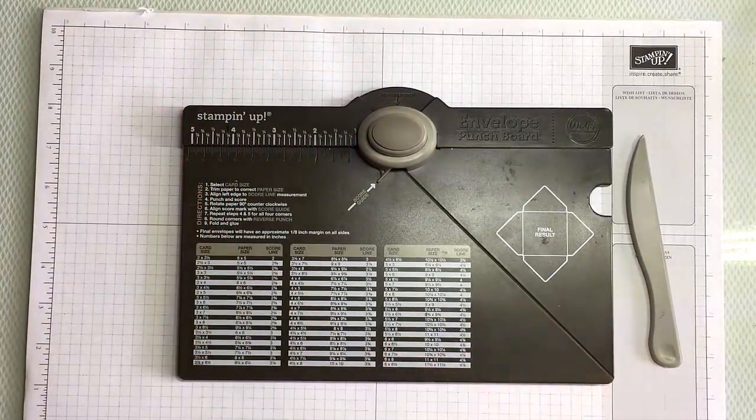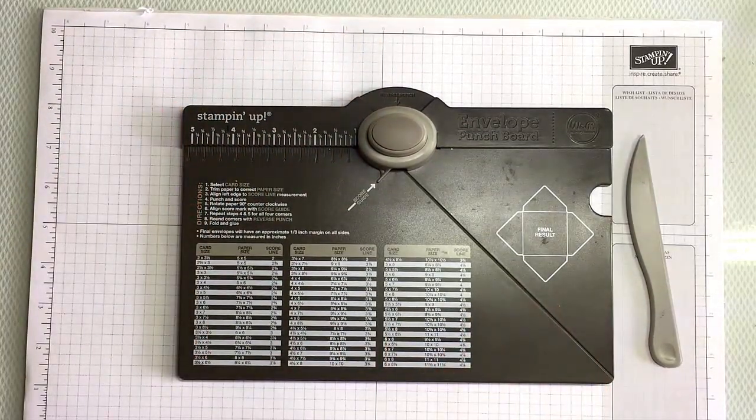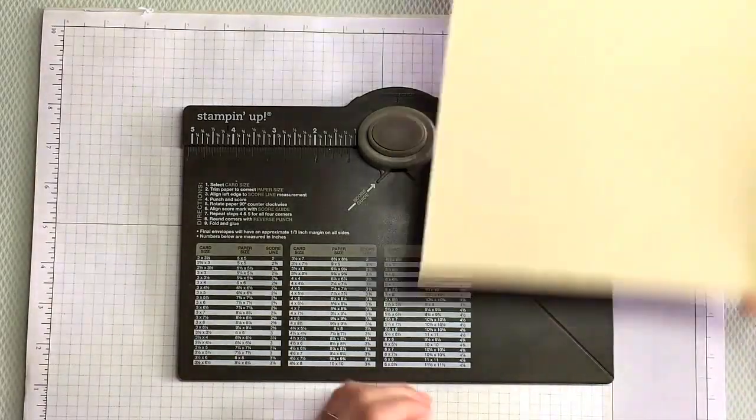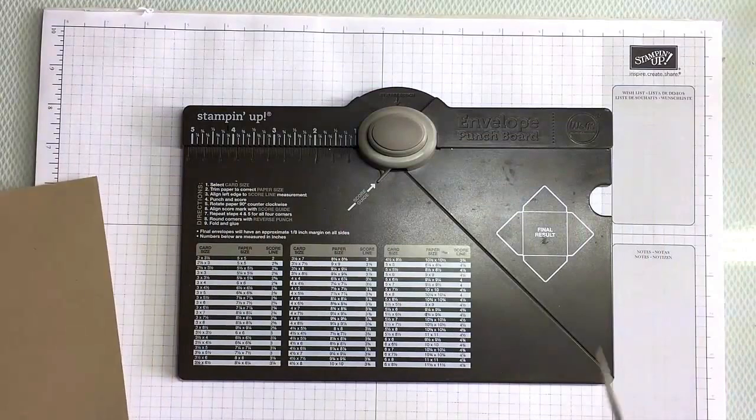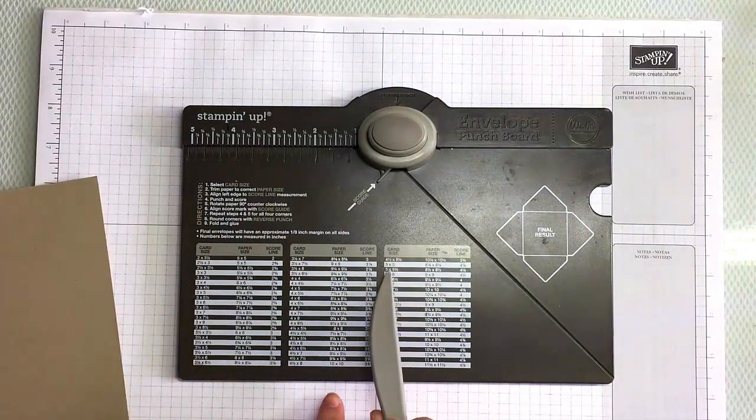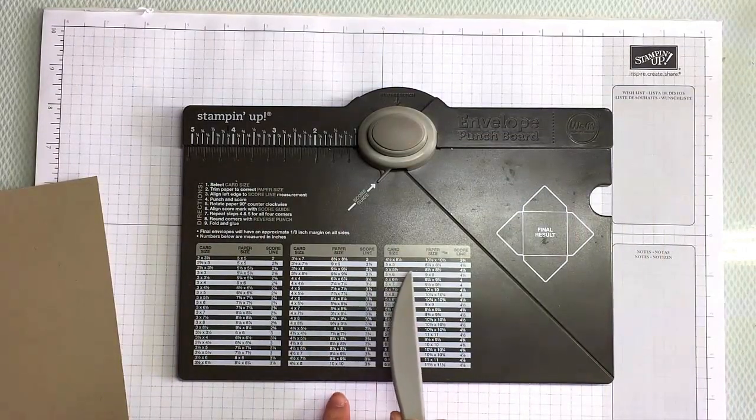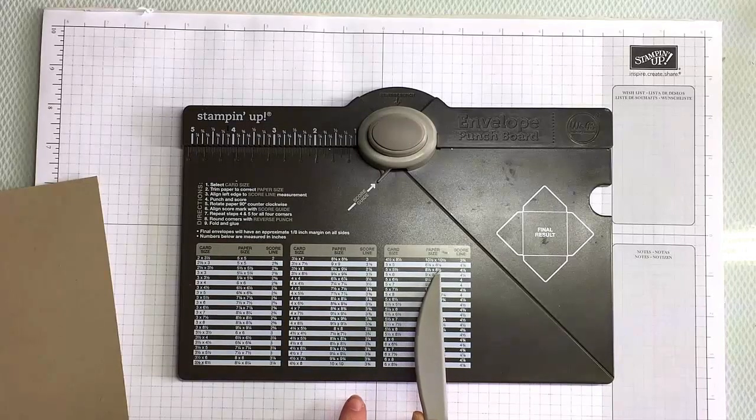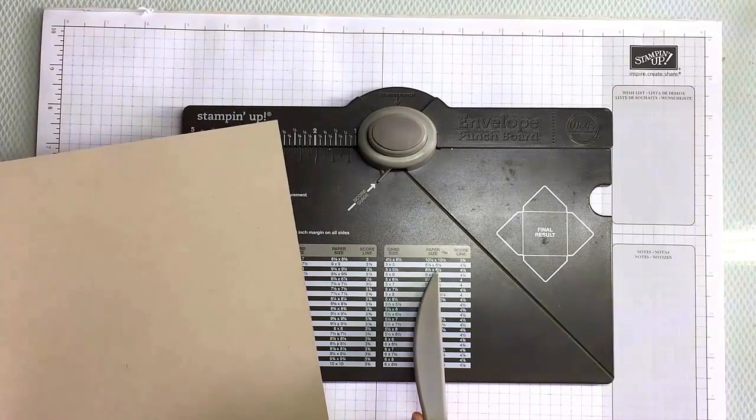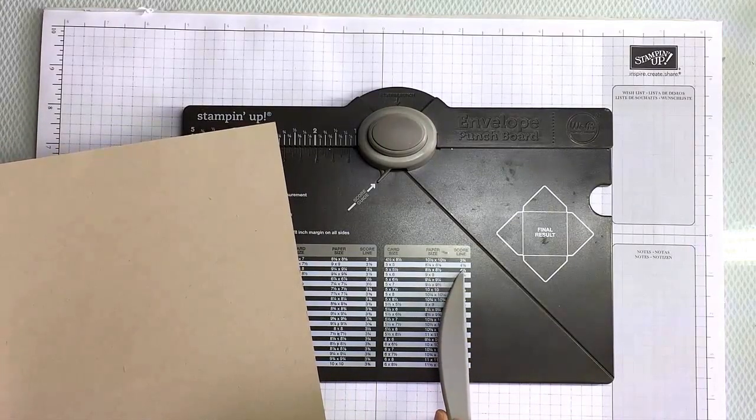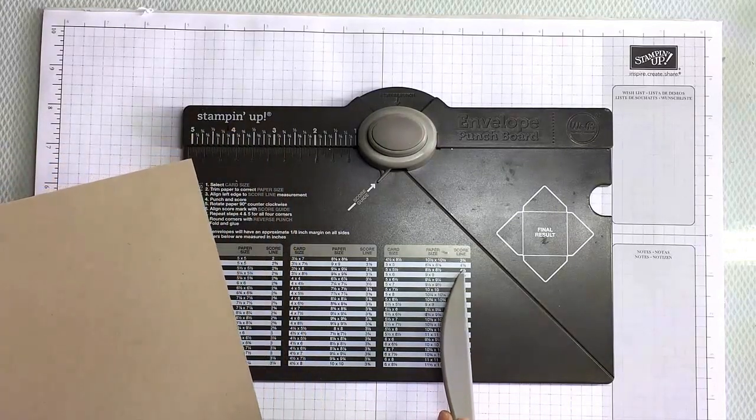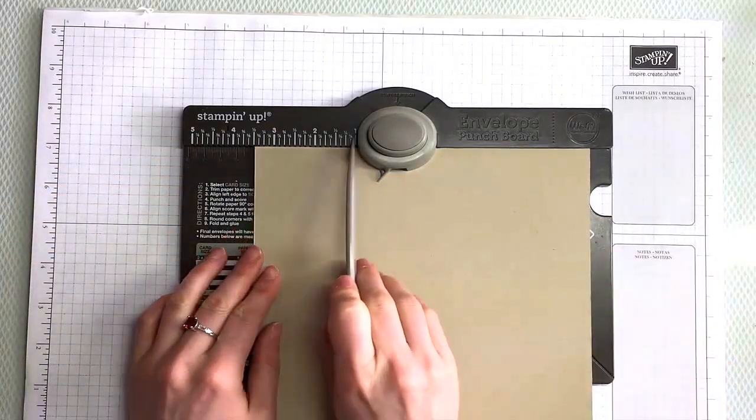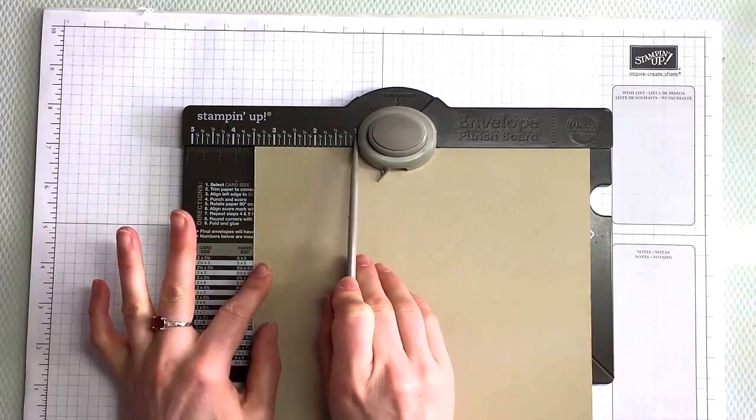Alright, so I want to show you first your basic five by five envelope. This is probably the size I use the most. So if we look here on our chart, the card size five by five is here. The paper size is eight and an eighth by eight and an eighth squared, which I've already cut for you out of crumb cake. And then your score line is four and one eighth inches. So you will slot the paper in like this, flat against the back. And you've got a ruler along the left hand side.